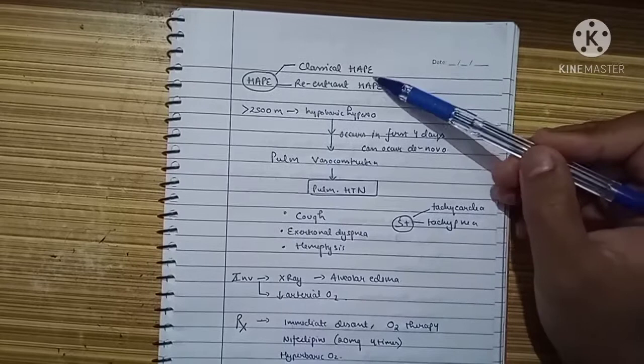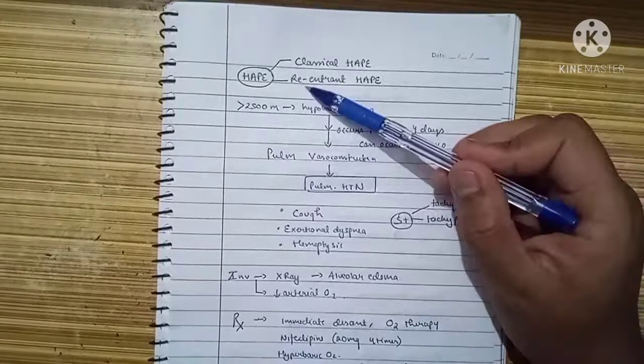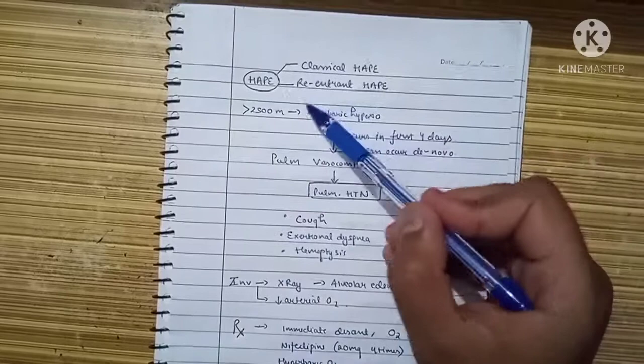In classical HAPE, a person living at low altitude visits an area of high altitude and gets the illness. Reentrant HAPE is a condition where a person who was earlier living at high altitude migrated to low altitude and revisited high altitude, getting the sickness upon re-entry.